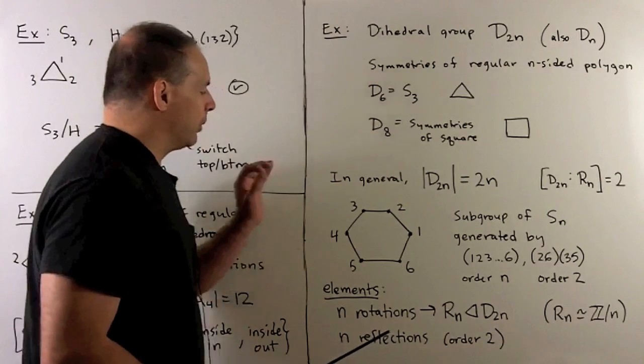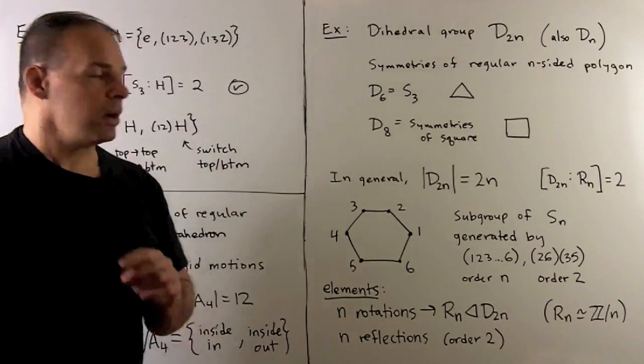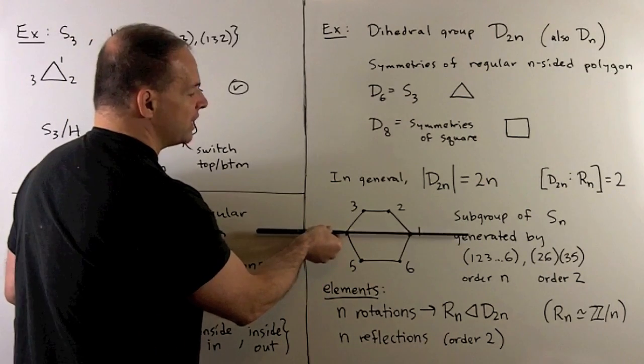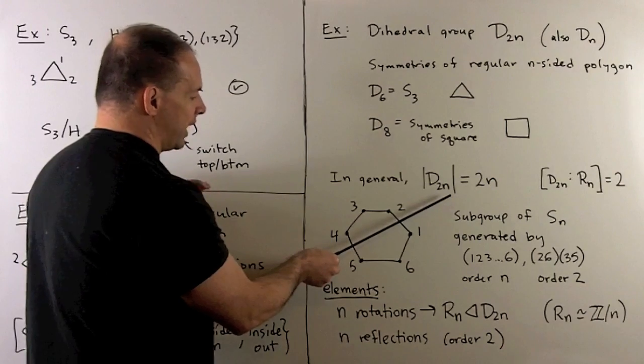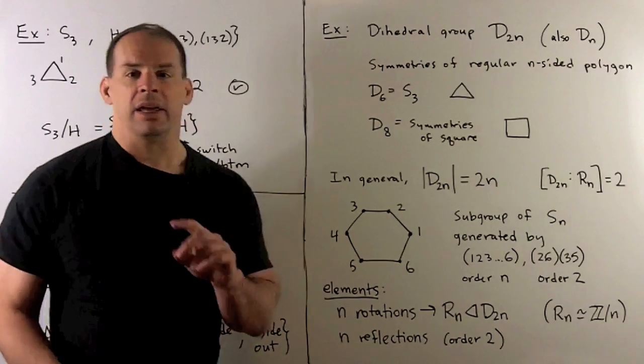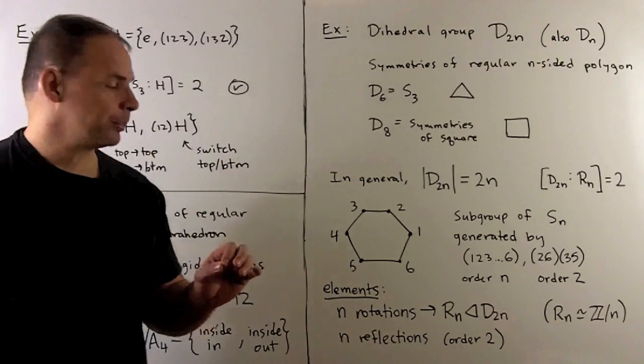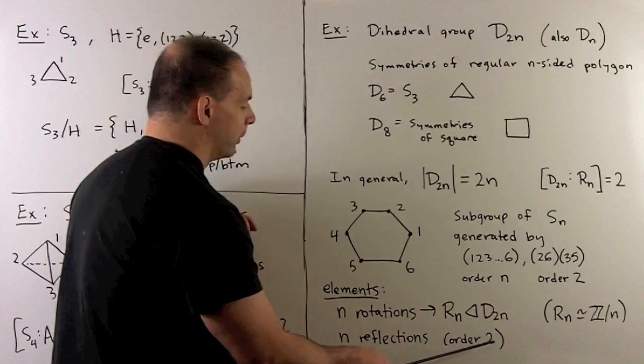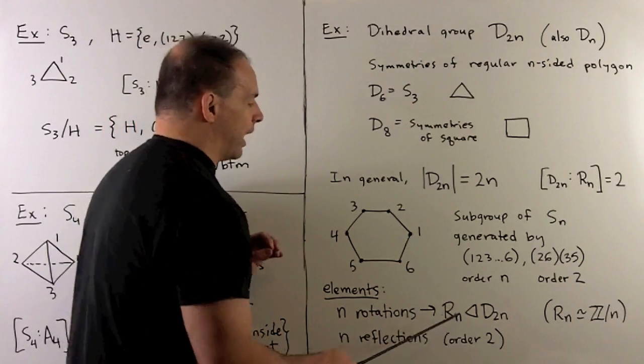The remaining elements are all going to be reflections. In this case, how do we get reflections? There are two types. Either our axis of reflection is through two opposing vertices, or the axis of reflection is through two opposing edges. If n is odd, it's always a vertex and an opposing edge. The reflections are all of order 2. For the order of the elements in the rotations, that's going to depend on what n you're using.